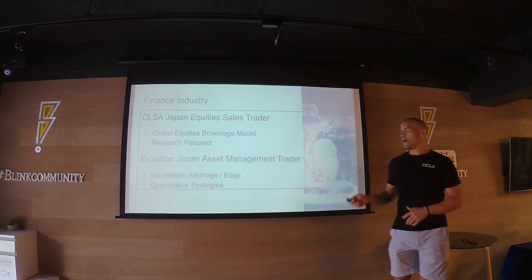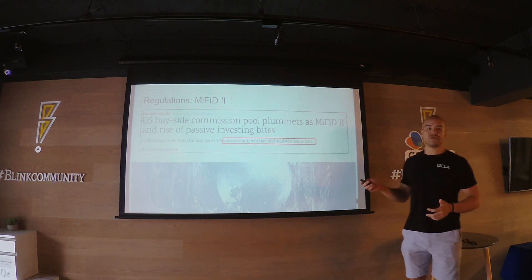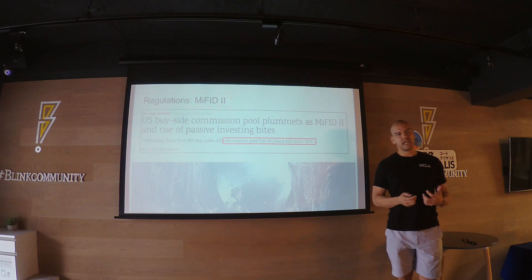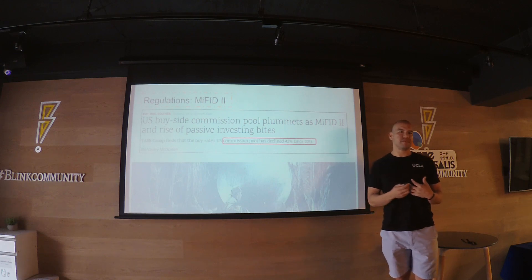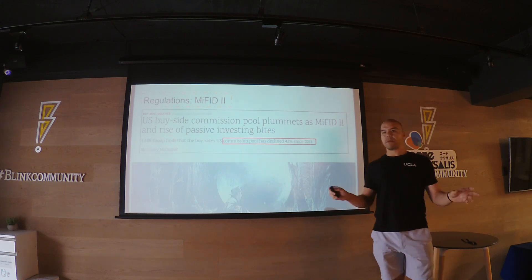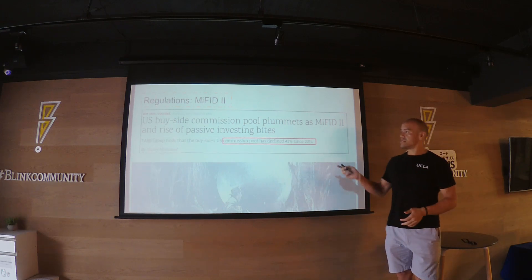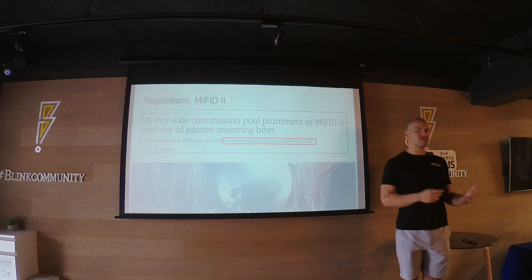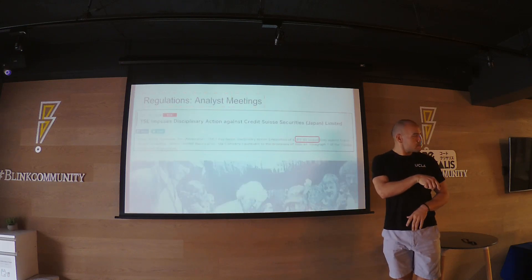One of the things affecting the financial industry is a regulation called MiFID II. This came about post the Lehman crisis coming out of Europe. As a result they're siphoning off the commission spend - originally you would spend commission dollars for research and execution in one combined bundle, but now that they're separating the two, commission dollars as they relate to research are coming down drastically - around 42 percent in the US since then.